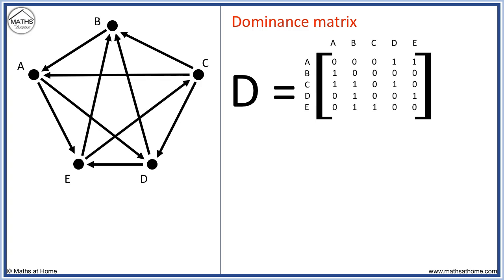To rank the players, we add up the 1s in each row of the matrix. A has 2, B has 1, C has 3, D has 2 and E has 2. We can easily see that player C came first with 3 points and player B came last with 1 point.